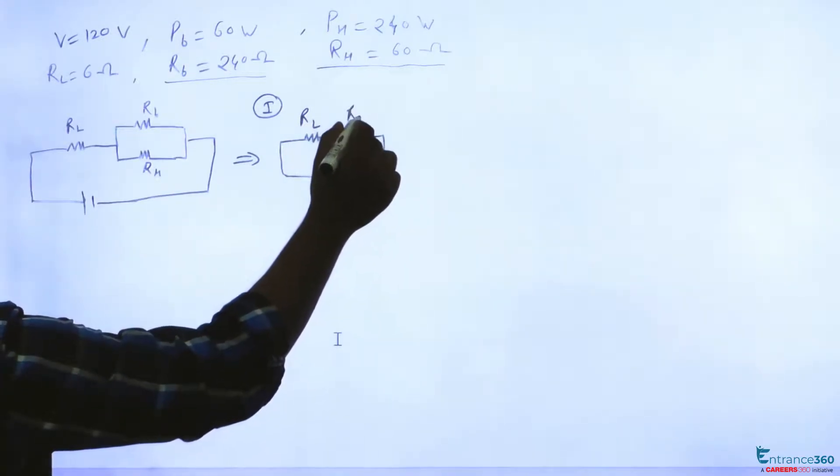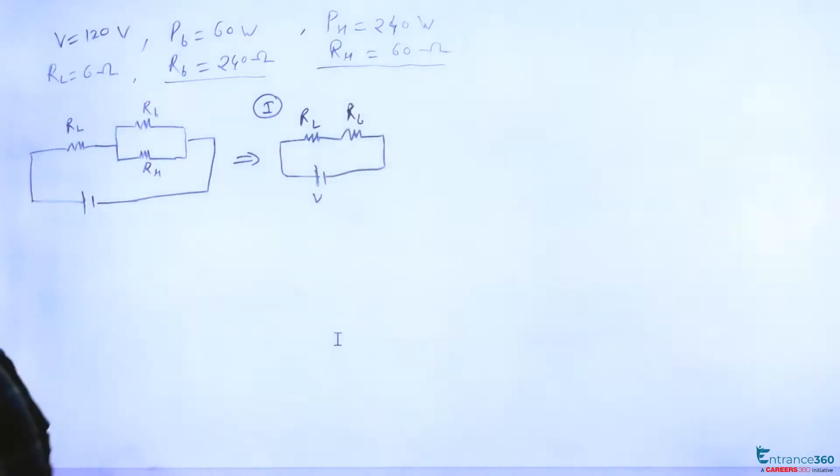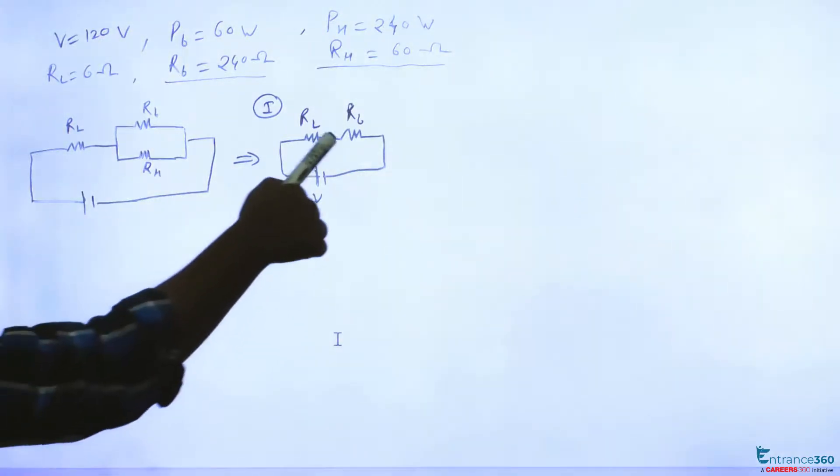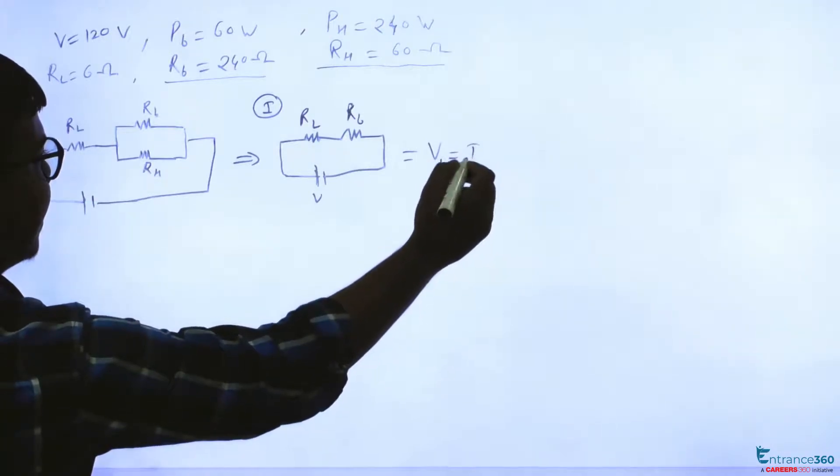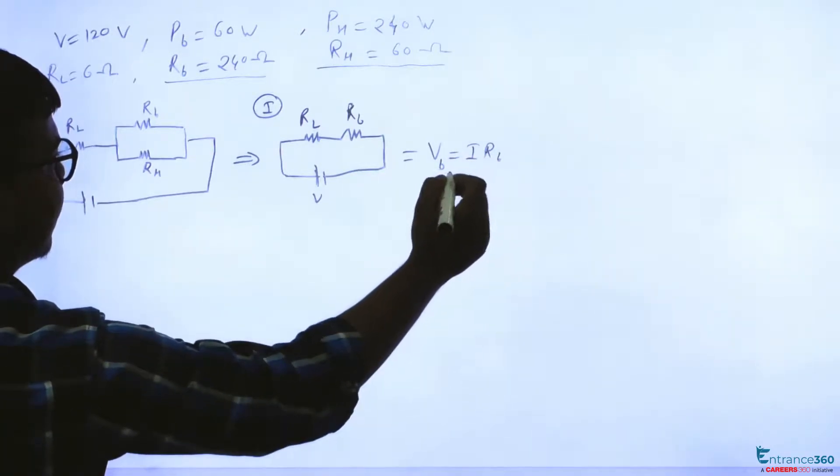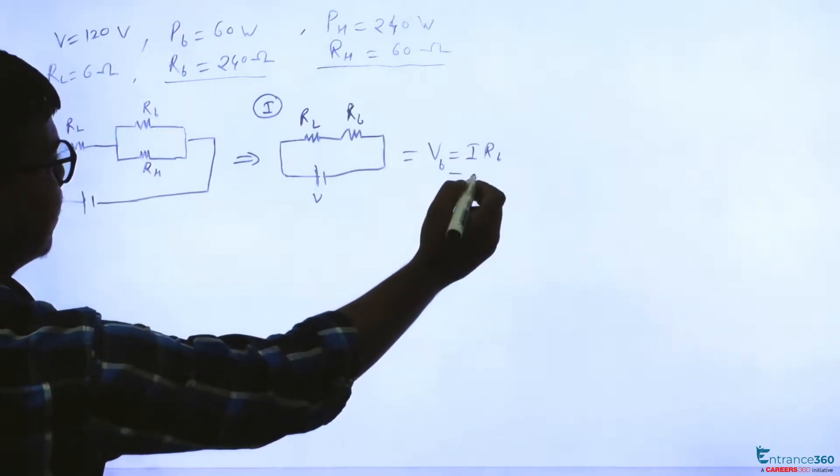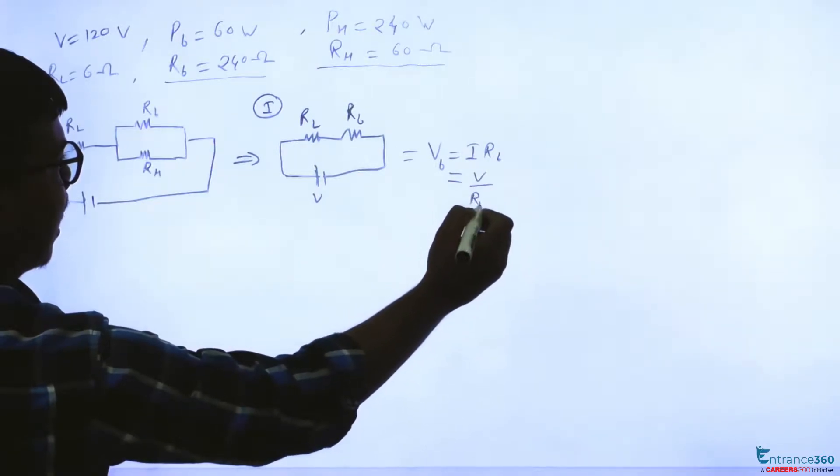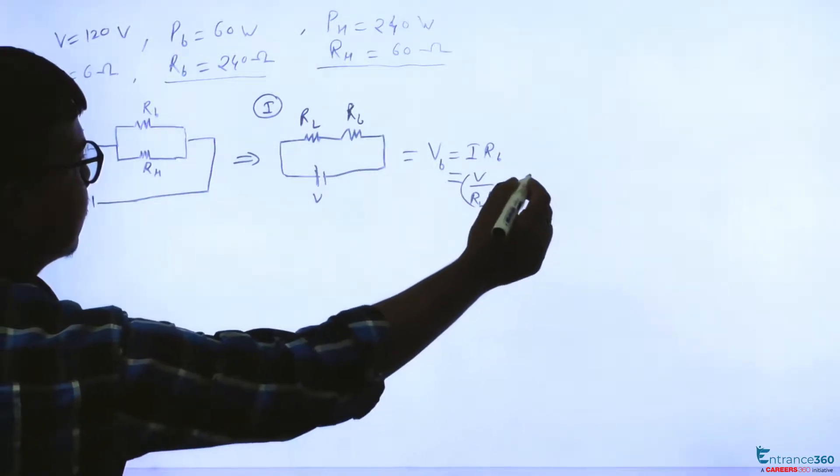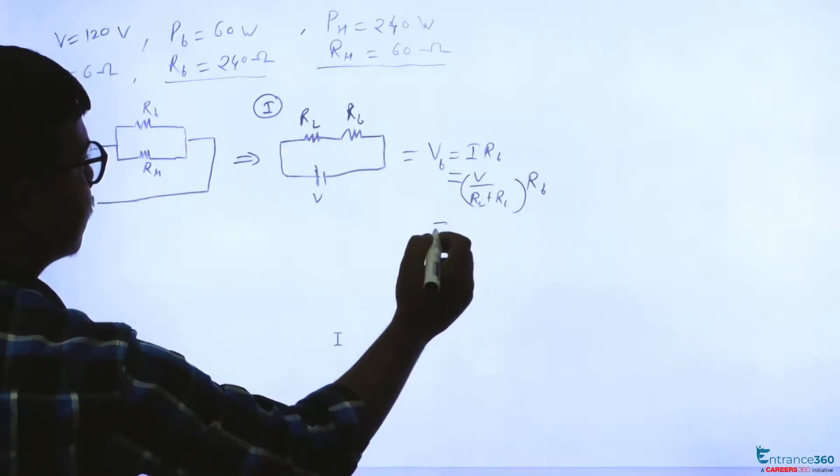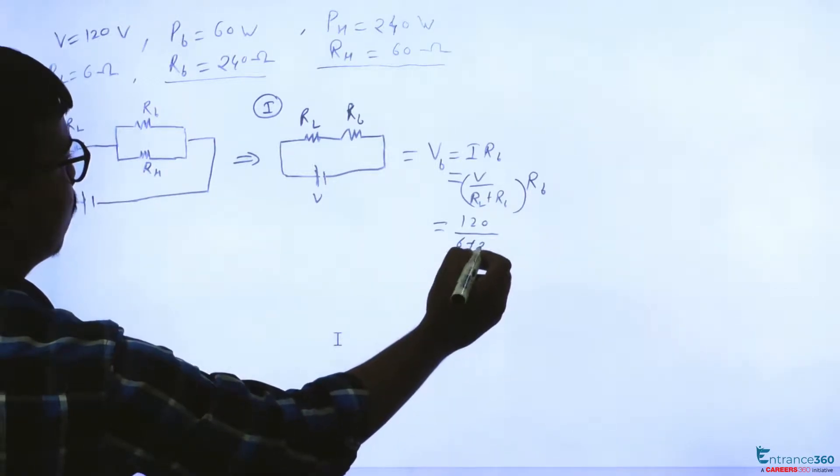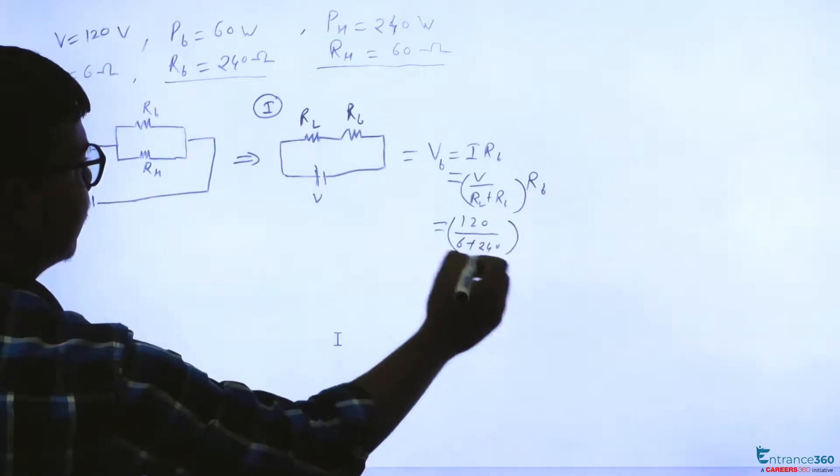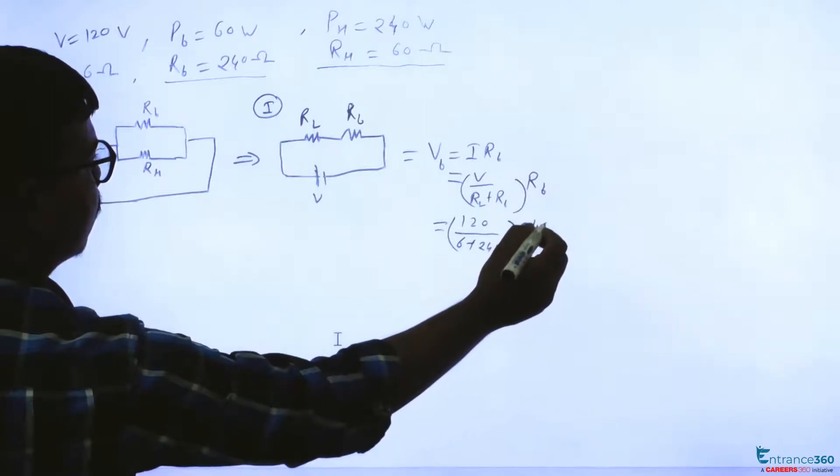So we can find out voltage drop across RB, which is given as V across B can be given as I net into RB, and I net can be given as simply V upon RL plus RB times RB. So this is 120 and this is 6 plus 240 into 240.